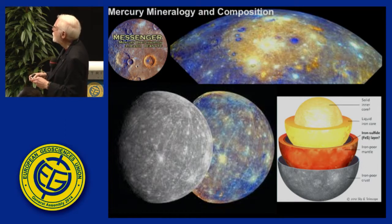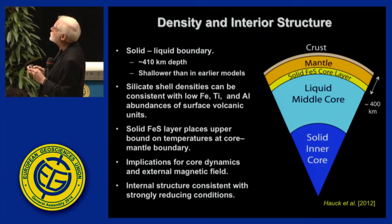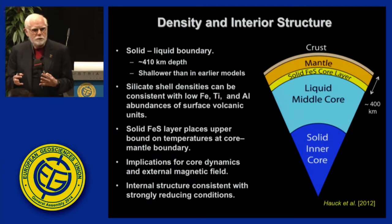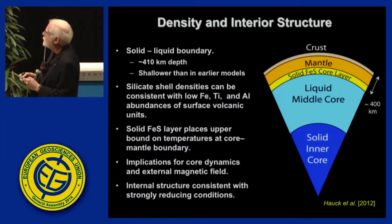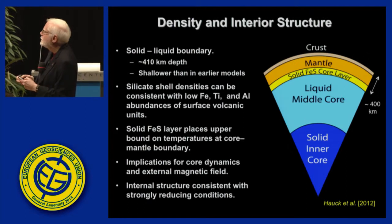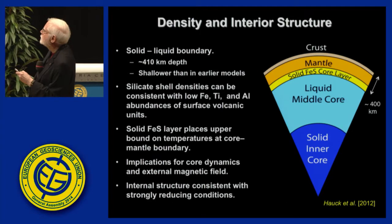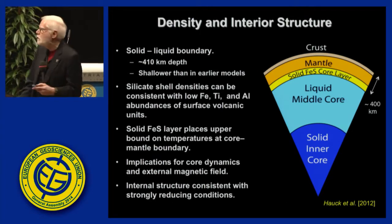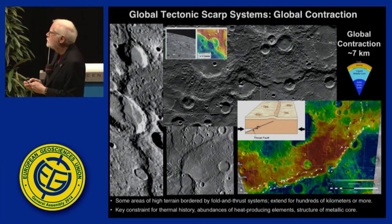With the instrumentation on Messenger, we learned about the mineralogy and composition. We know there's an iron-poor crust and iron-poor mantle. These things help us, together with geophysical tracking of the satellite, understand the density of the interior structure. A paper by Hauck et al. (2012) suggests 410-kilometer depths to the liquid boundary and a solid iron sulfide core layer, with huge implications for the temperature boundary between the liquid core and the mantle and comparison to the Earth's core-mantle boundary.